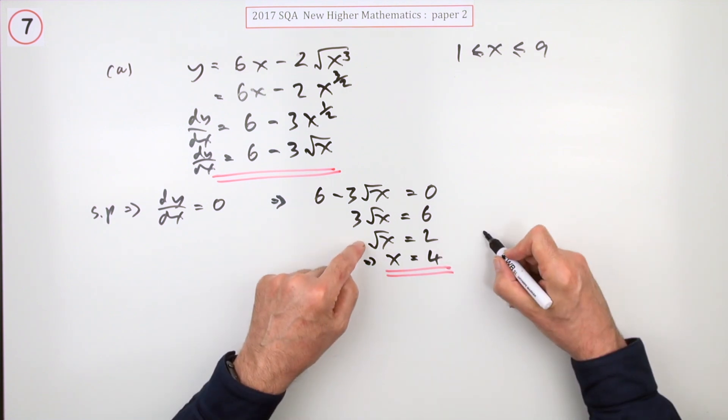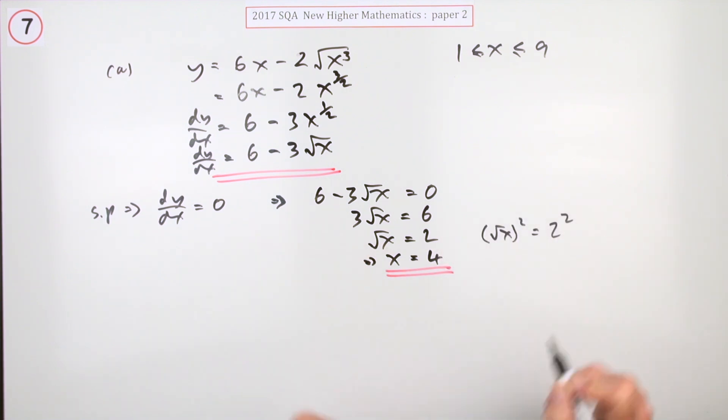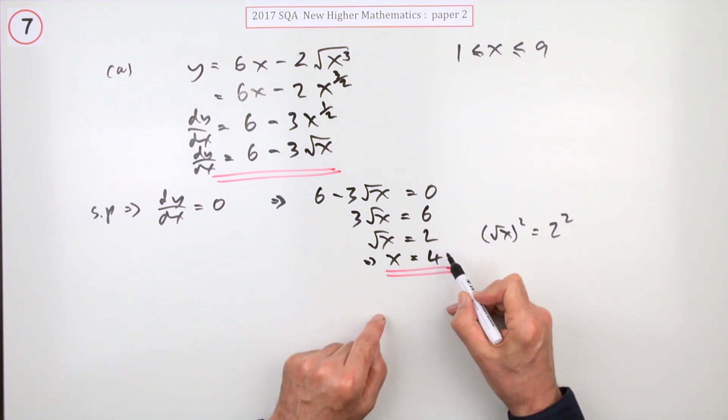I don't think you need to put in the working where you'd say that side squared is that side squared. I think pretty sure you can just jump in with that, or maybe x equals two squared equals four.